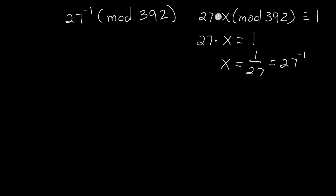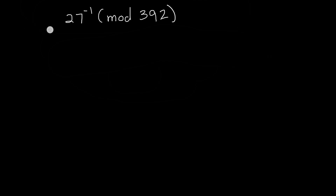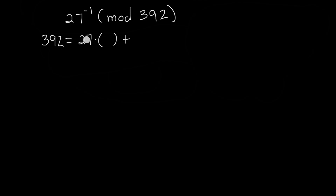To start this process we're going to begin with the Euclidean algorithm. We start with the number 392, which is our modulus, and make that equal to 27 multiplied by some number plus some remainder. If you take 392 and divide it by 27, you find that 27 goes into 392 fourteen times. 14 times 27 is 378, and 392 minus 378 is 14. So 392 equals 27 times 14 plus 14.